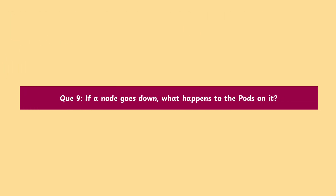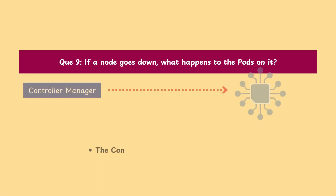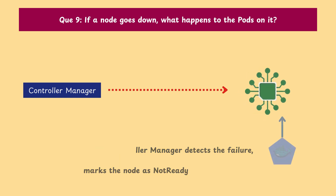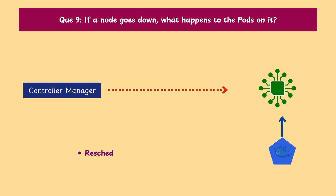Question 9: If a node goes down, what happens to the pods on it? The controller manager detects the failure, marks the node as not ready, and reschedules the pods to healthy nodes if possible.